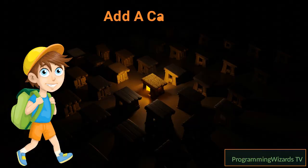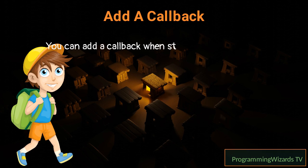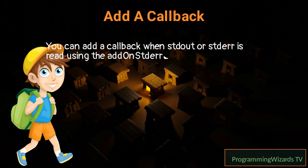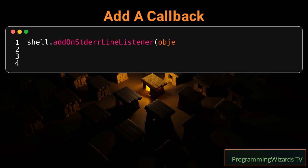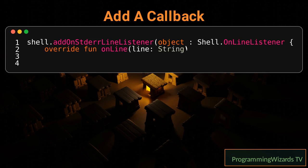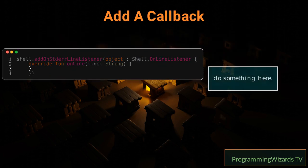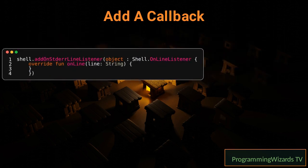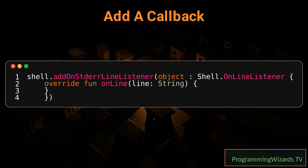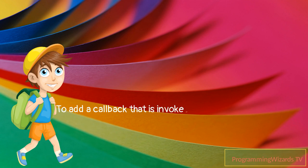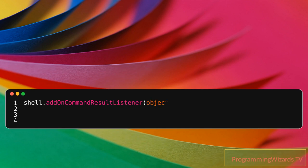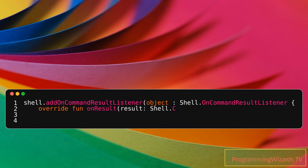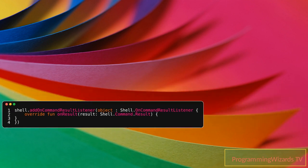How can I add a callback when stdout or stderr is read? You can add a callback when stdout or stderr is read using the addOnStderrLineListener function in KTSH. To add a callback that is invoked each time a command completes in KTSH, you can use the addOnCommandResultListener function.